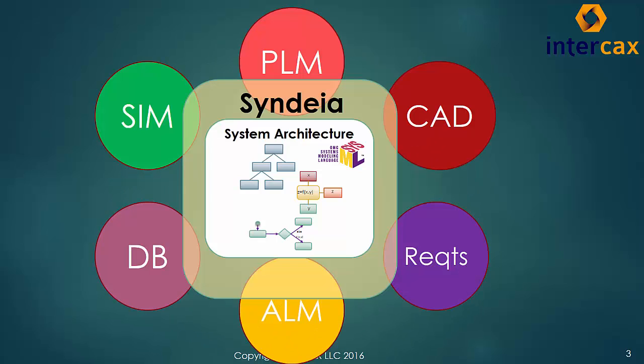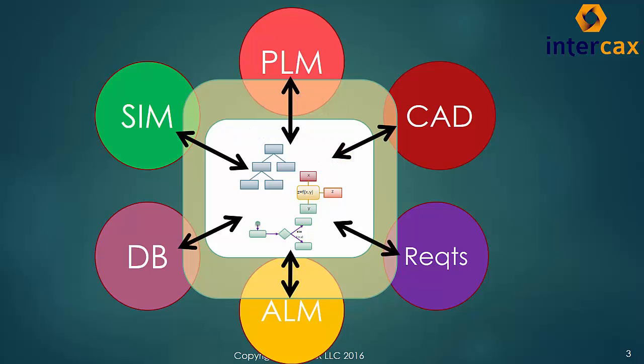Cyndia is a software platform for generating and using a persistent network of connections across the engineering domain. It uses OMG-SysML models as a central roadmap and clearinghouse for system information, and connects the SysML elements to PLM repositories, databases, CAD and simulation models, and other tools.